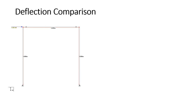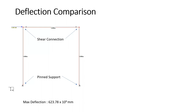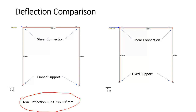To prove this, I modeled a simple portal frame and checked its deflection. With a shear connection between beam and column and a pin support at the bottom, the deflection was 623.78 × 10⁹ mm — which is very huge, confirming the structure is completely unstable. When I changed the supports to fixed, the deflection drastically reduced to 16.35 mm, showing that the structure is now stable.